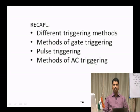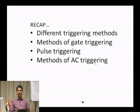In R firing, the firing angle cannot exceed 90 degrees. In RC firing, you can go up to 180 degrees. UJT firing is a method of pulse firing. Today we will see the digital firing circuit.